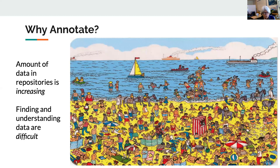Outside of a few controlled monitoring programs like EPA, there are very few existing dictionaries that can be used to actually describe measurements, but semantic work can address that gap. A typical search might be based on strings like 'red and white' or a person's name, but that doesn't help you when the landscape looks like a Where's Waldo book. A semantic search can help you find things like people wearing red t-shirts with horizontal red and white stripes. Annotation is what drives those searches.